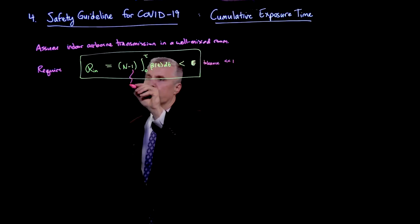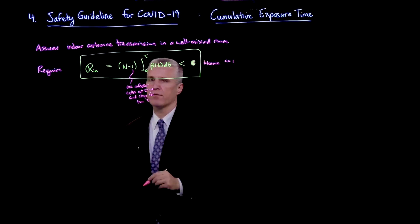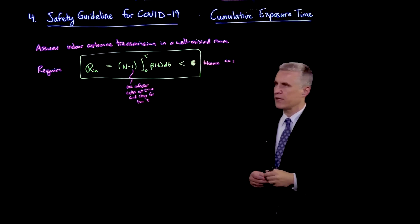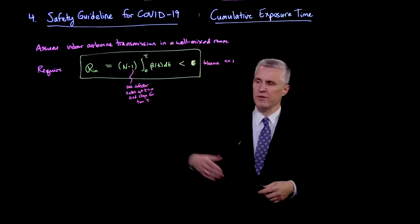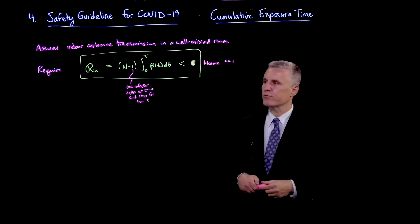From one infector that enters the room at t equals 0 and stays for a time tau in the presence of a total number of n people in the room, which is the occupancy of the room.